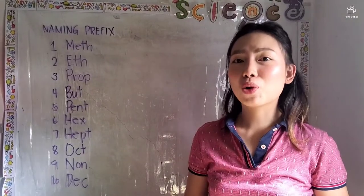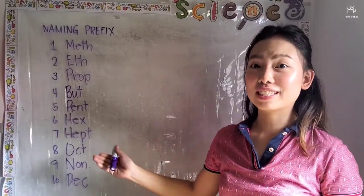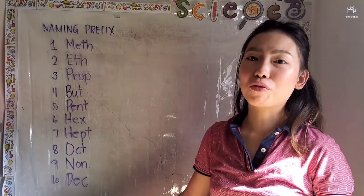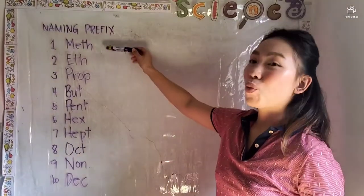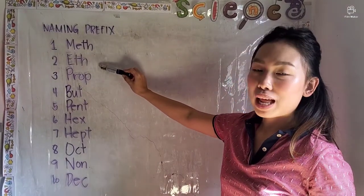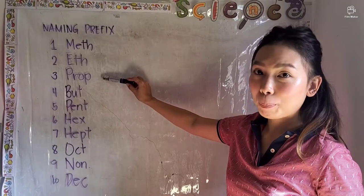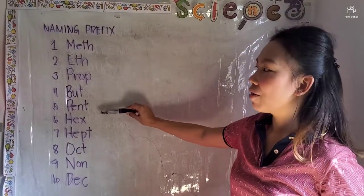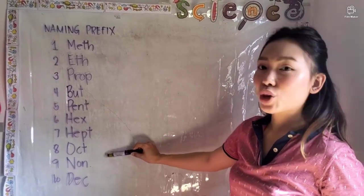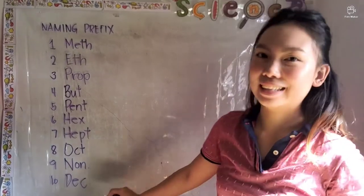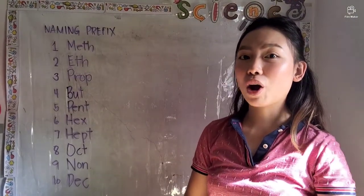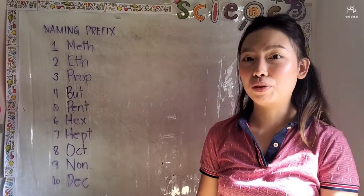In naming hydrocarbons, we use naming prefixes. These are the prefixes for every number of carbon atoms: 1 carbon = met-, 2 = et-, 3 = prop-, 4 = but-, 5 = pent-, 6 = hex-, 7 = hep-, 8 = oc-, 9 = non-, 10 = dec-. These prefixes are used for every number of carbon atoms in the carbon chain.